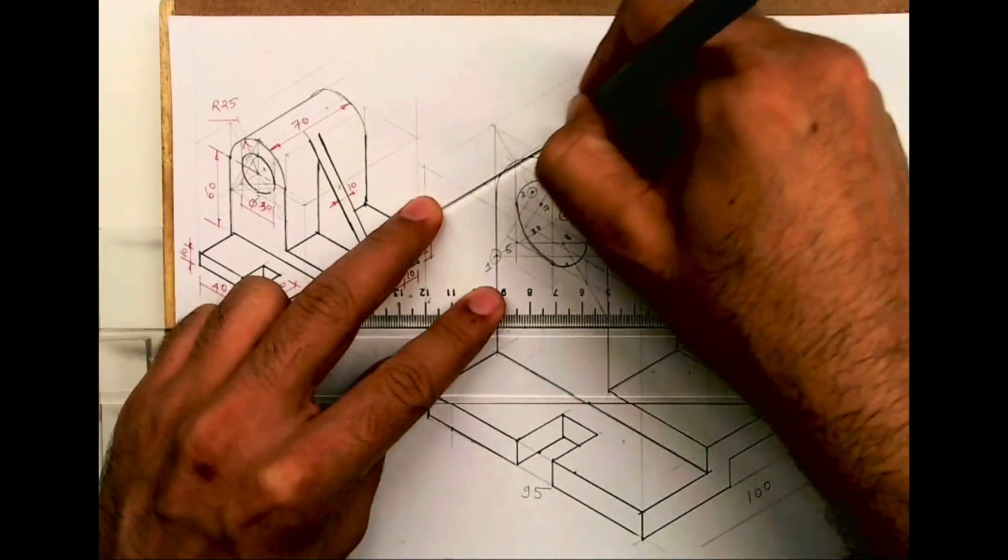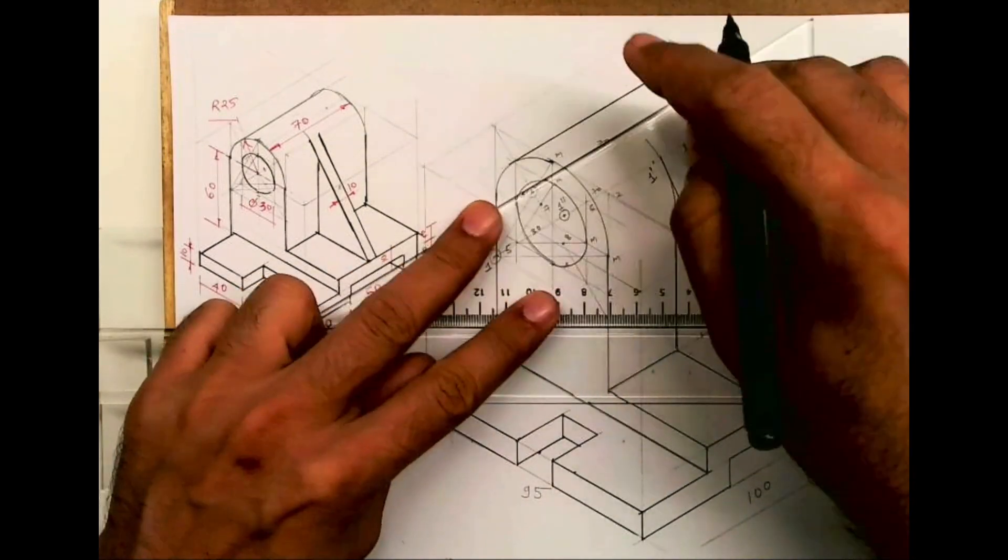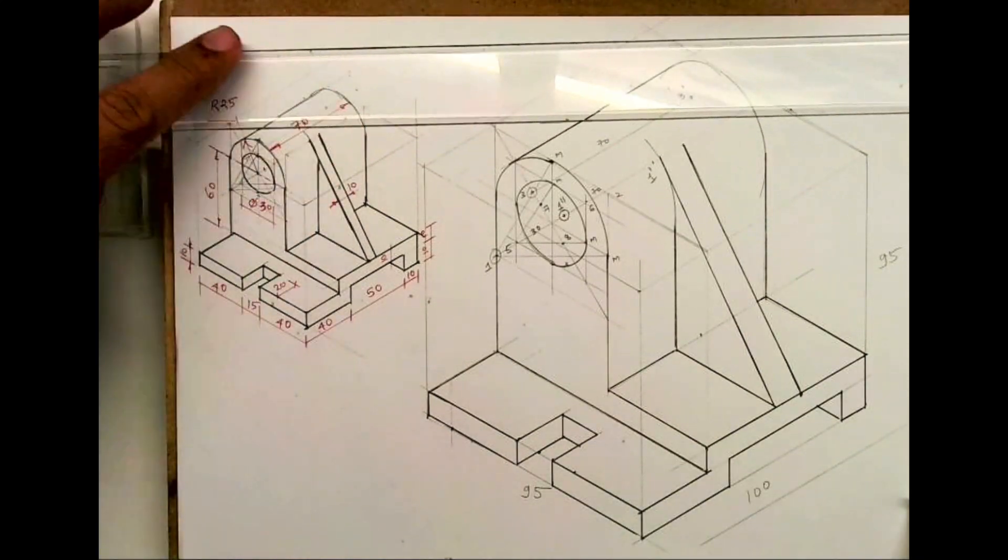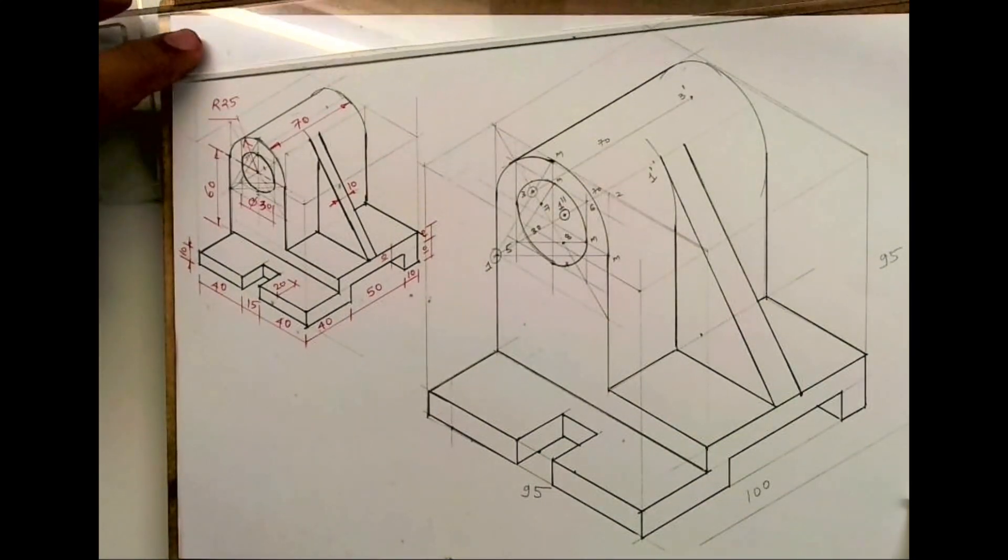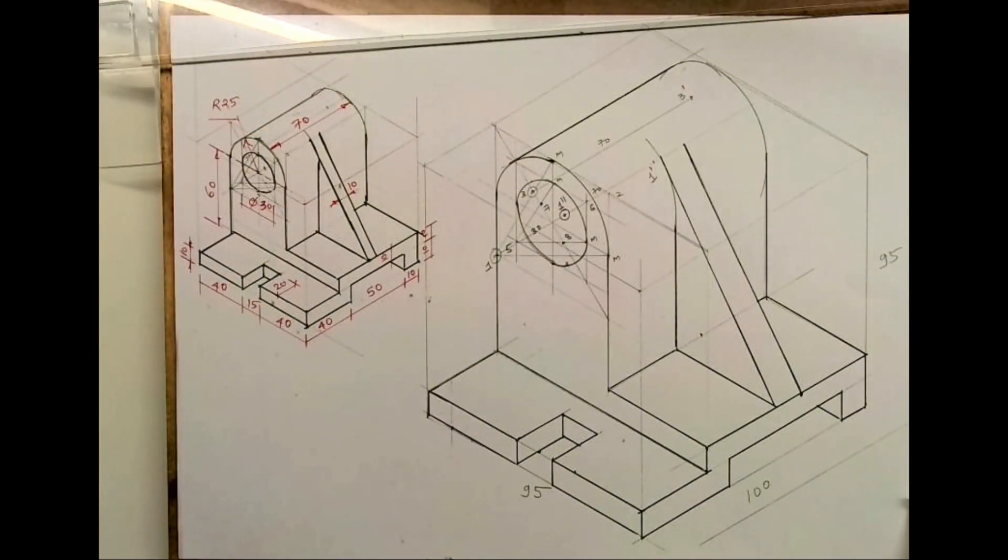So we are done with copying isometric of this sum. I hope you people have understood this. Thank you.